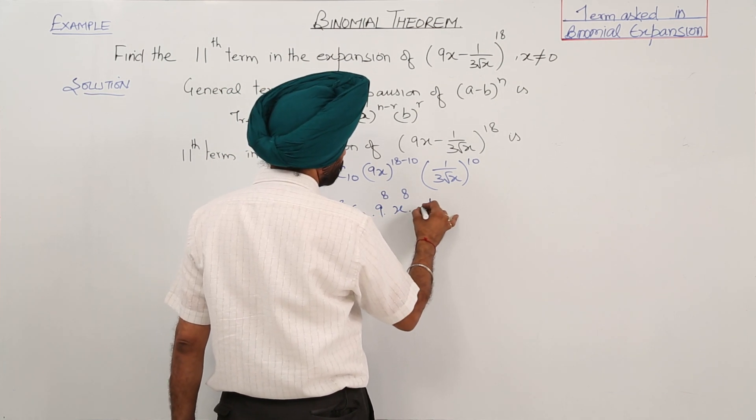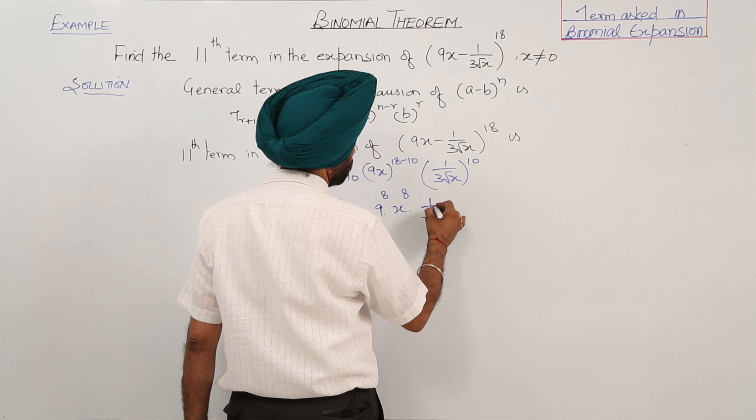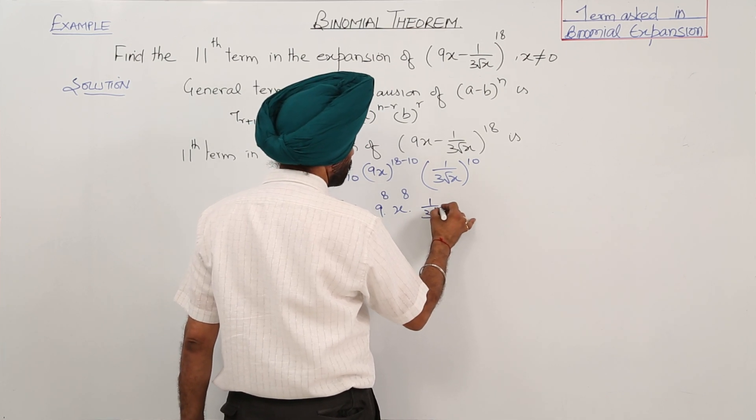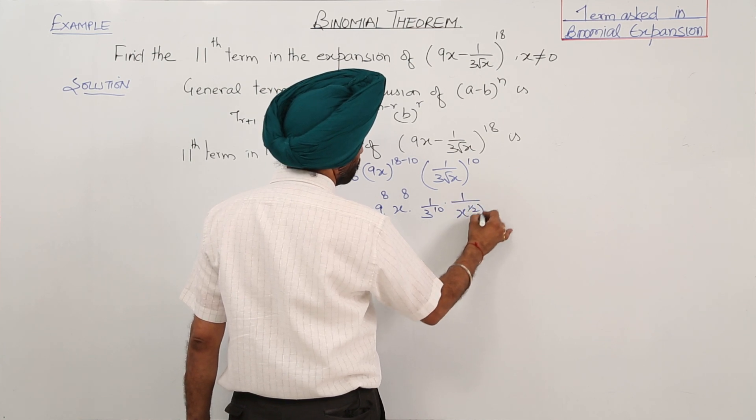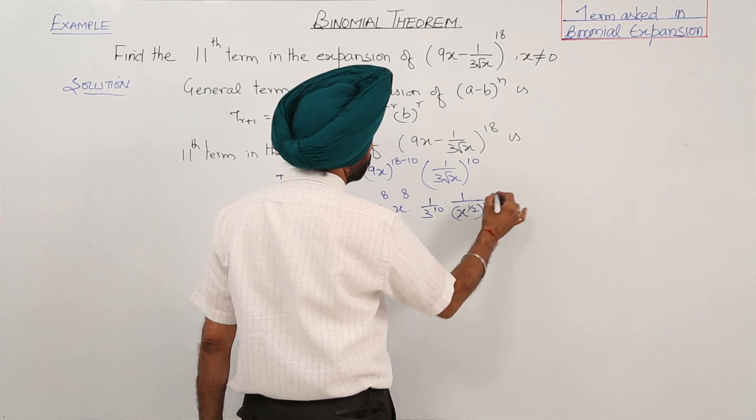Times 1/(3 raised to power 10) times 1/(x raised to power 1/2) and its power 10, which gives 1/(x raised to power 5).